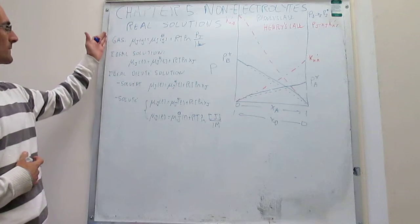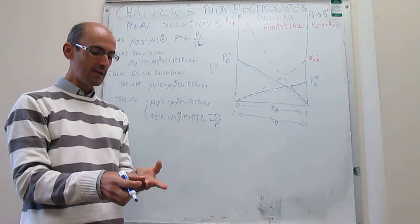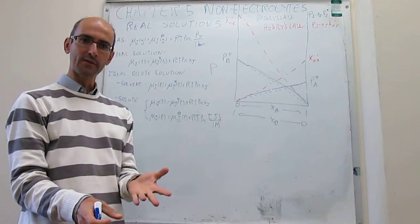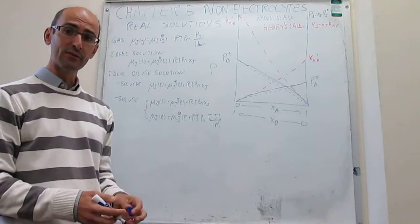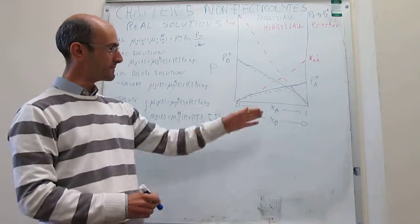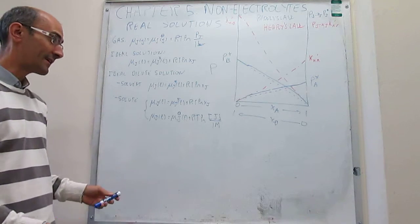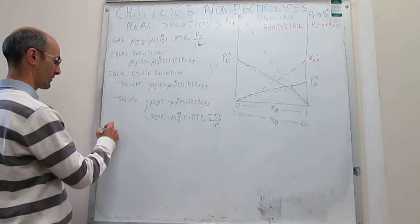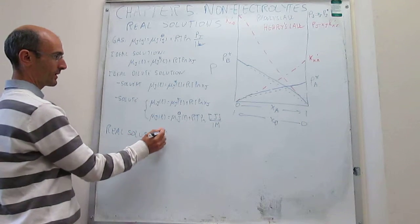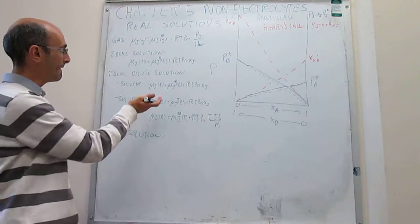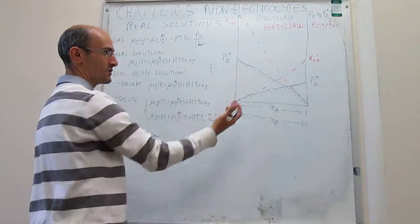Notice that the expressions for the chemical potentials are always very similar. The chemical potential of the conditions you're interested in is going to be equal to the chemical potential of a reference, plus a correction from the fact that the target condition might be different from the reference. When you're in this particular case, you should expect the chemical potential to have a similar form. So the way we're going to write the chemical potential for a real solution is to take the same form we had for ideal solutions or ideal dilute, but modify it slightly so we can handle cases where you don't satisfy any of the laws.